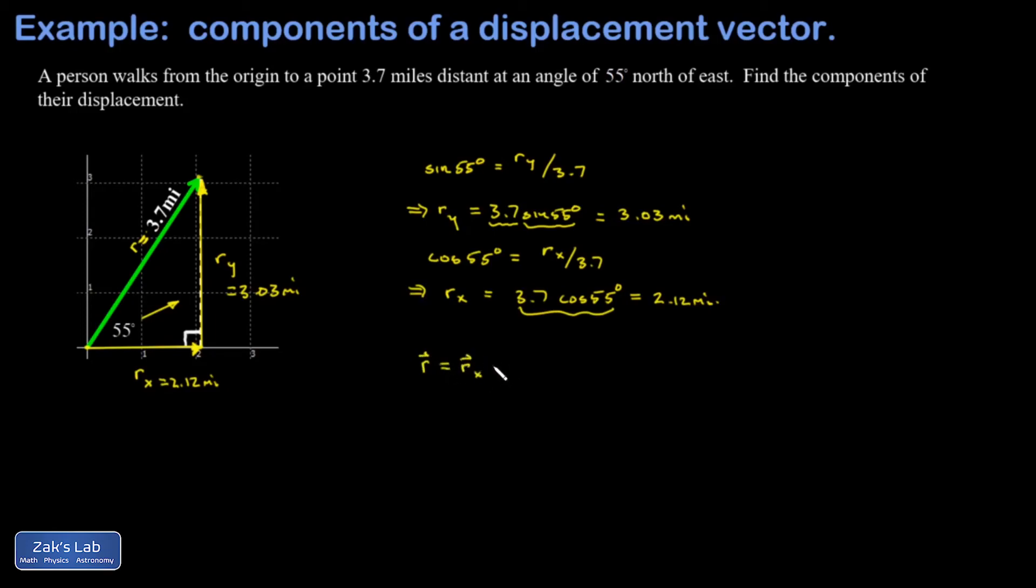In other words, the original displacement vector r equals the vector sum of the components. In physics, it's frequently useful to break vectors into components and also to combine components back into the original polar form with magnitude and angle.